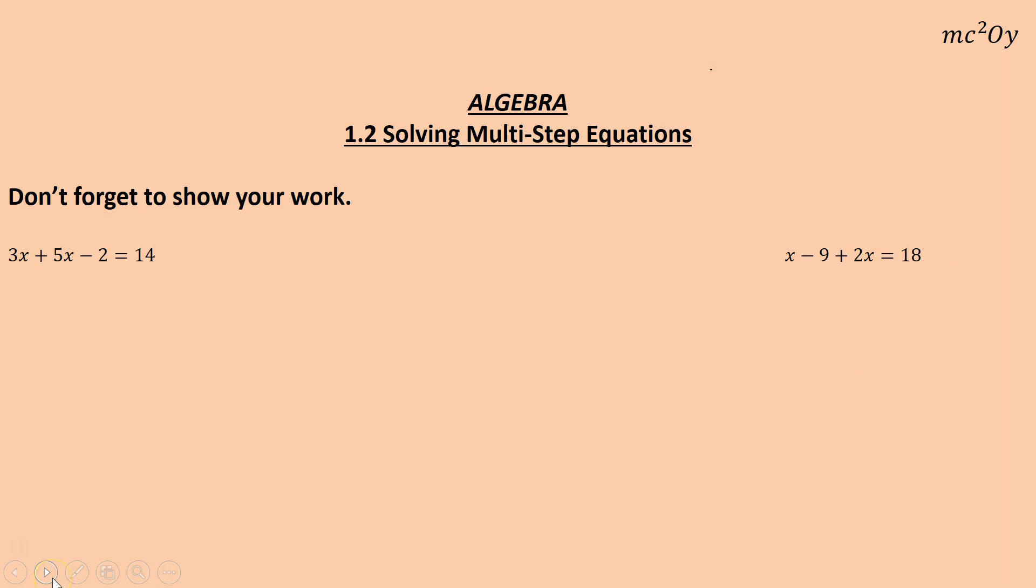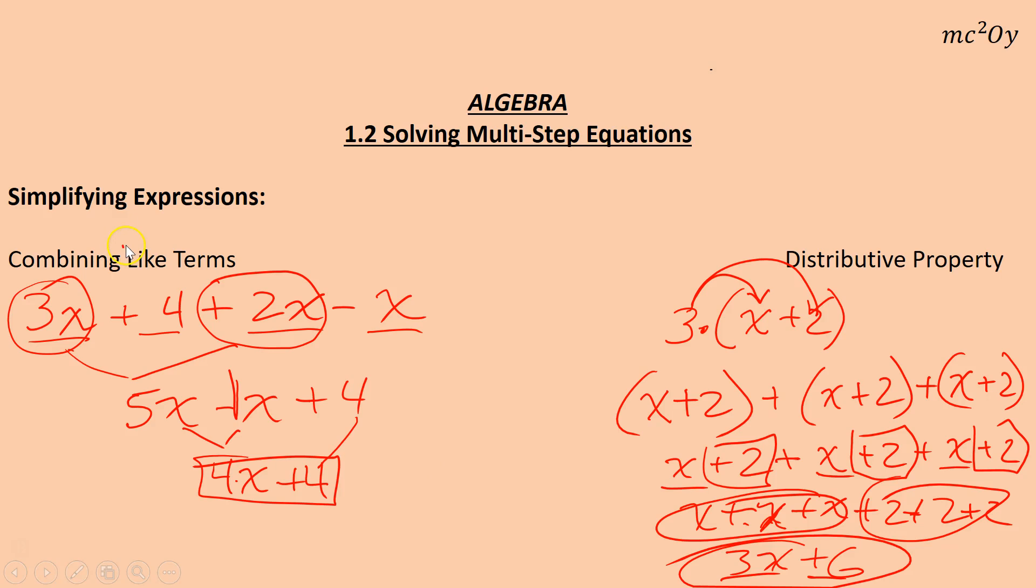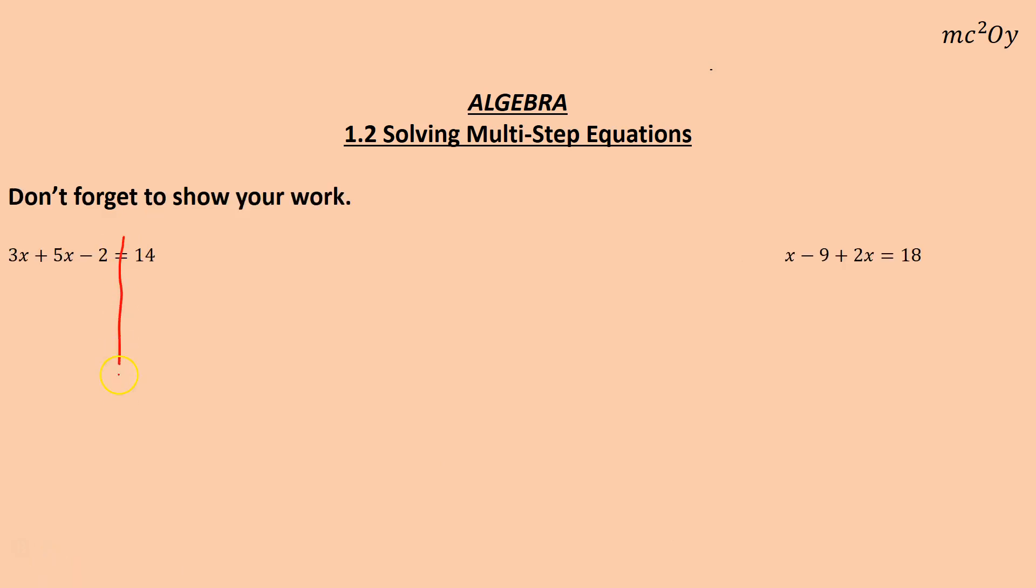Now that we know that, we can actually solve some multi-step equations. First thing I'm going to have you do, just like on the previous lesson, is to draw a line down the equal sign. And that's going to balance out the equations. Now I have two expressions. I have an expression on this side, 3x plus 5x minus 2. An expression on this side. I need to simplify both sides first. Now obviously I can't do anything to 14. But what I could do over here, 3x and 5x, when I combine those like terms, that's 8x's.